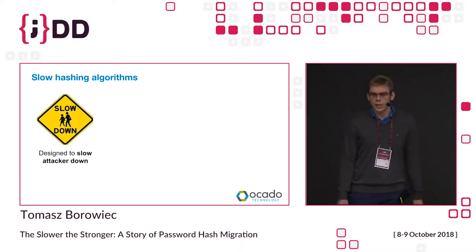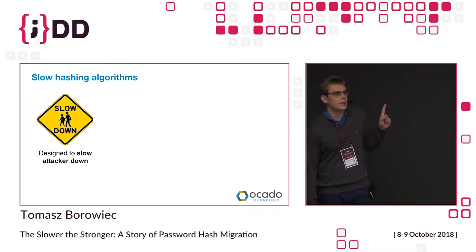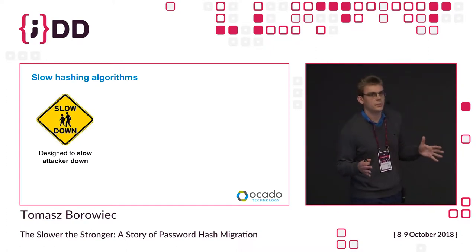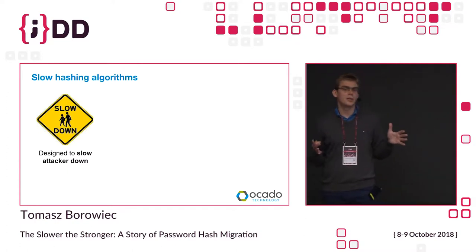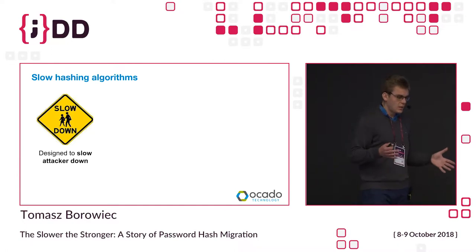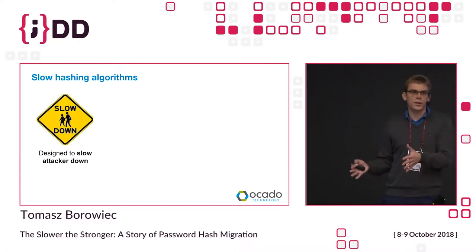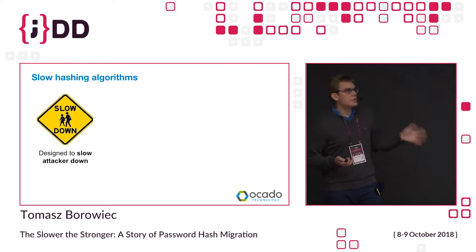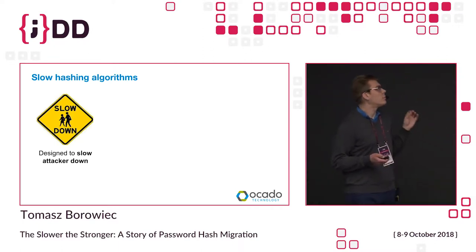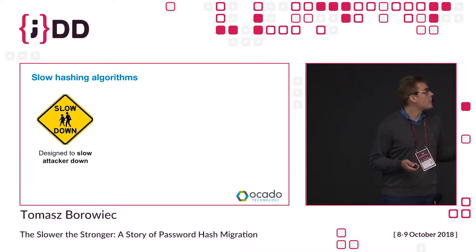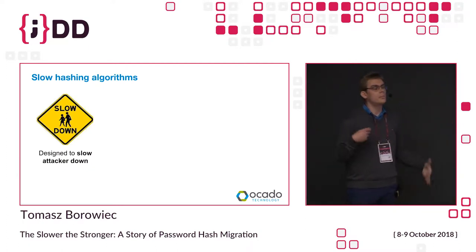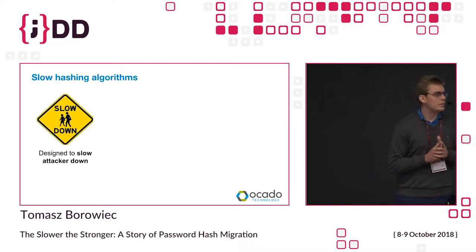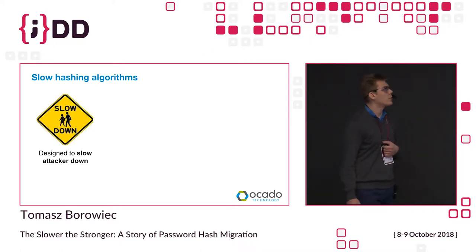Slow hashing algorithms are designed to slow the attacker down. If we lose our password hashes database, the attacker has to run the algorithm and check the outputs to get the passwords — that's cracking a password database. In their design, they are slow so that if we lose the database, it will take a long, long time for the attacker to get the passwords. We are buying ourselves more time to inform our customers to change their passwords.